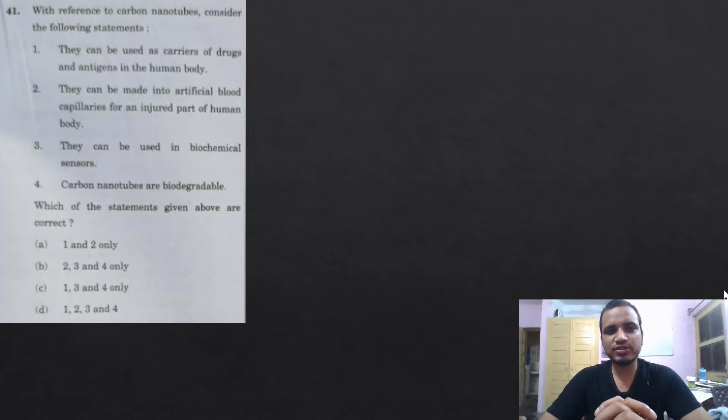If you see the options now, this will be known basically to a person who deals more with material science. But yeah, if you remember, then they can be used for drugs. They can be made into artificial blood capillaries for an injured part of your body - this is not sure, but I think this cannot be made. They can be used in biochemical sensors - yes, it is used. Carbon nanotubes are biodegradable - yes, this is also biodegradable.